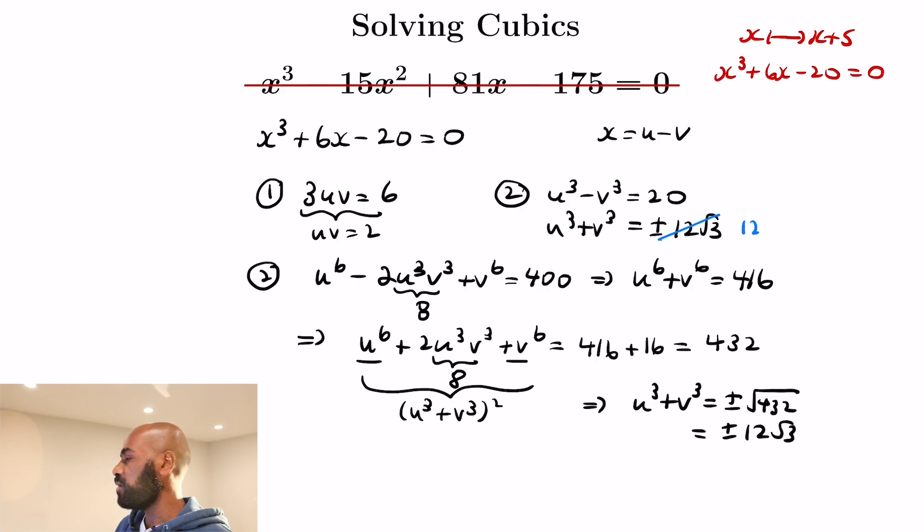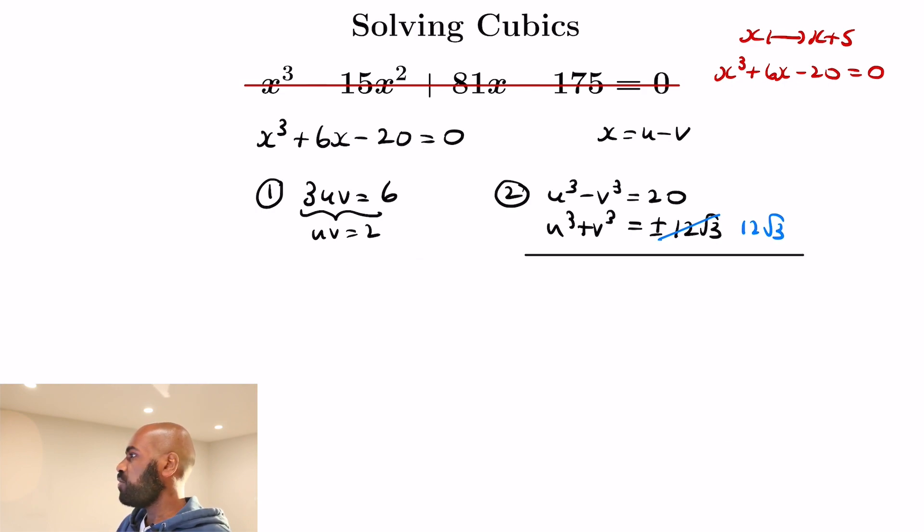We're not out to find all of them, so we can pick one of these values. We'll pick 12 root 3 and then solve and see what we get. So now we can figure out u cubed by adding these two equations.